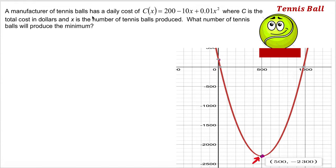A manufacturer of tennis balls has daily costs of C(x) equals 200 minus 10x plus 0.01x squared, where C is the total cost in dollars and x is the number of tennis balls produced. What number of tennis balls will produce the minimum?